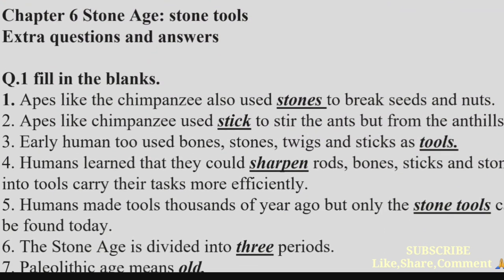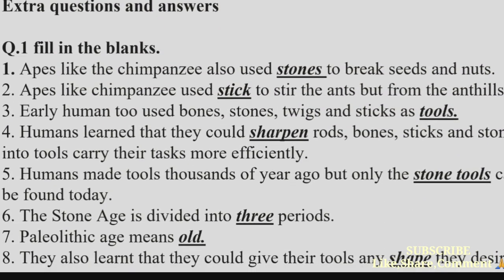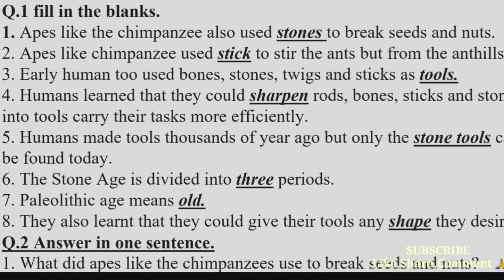Extra Question 1: Fill in the blanks. (1) Apes like chimpanzees also used — to break seeds and nuts. Answer: stones. (2) Apes like chimpanzees used — to stir the ants out from the anthills. Answer: stick.